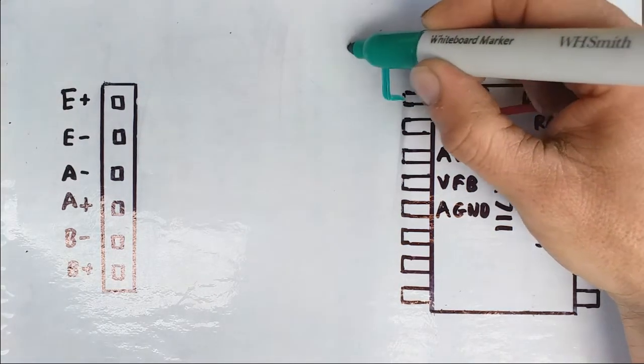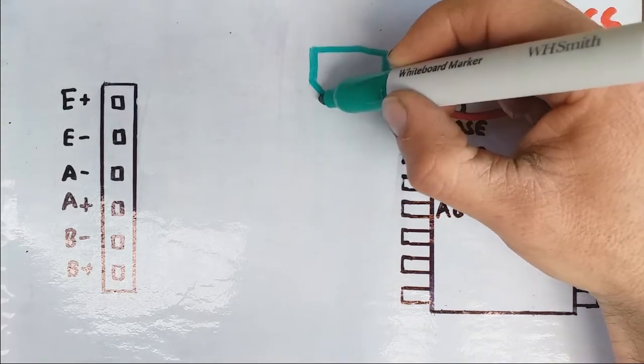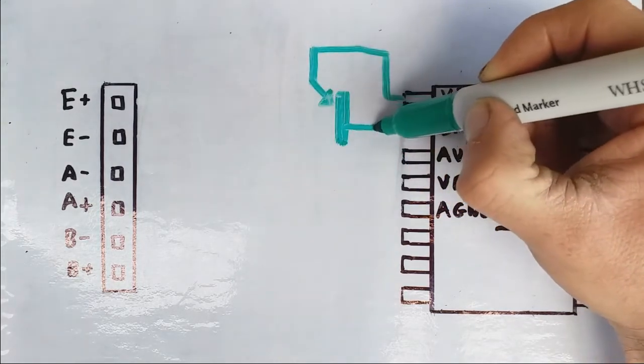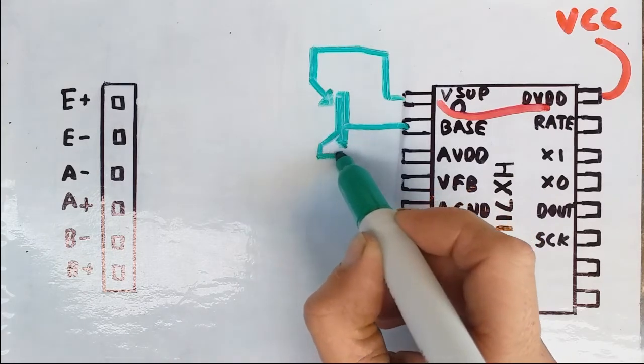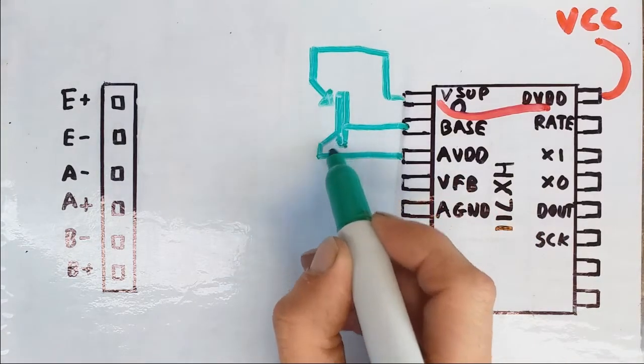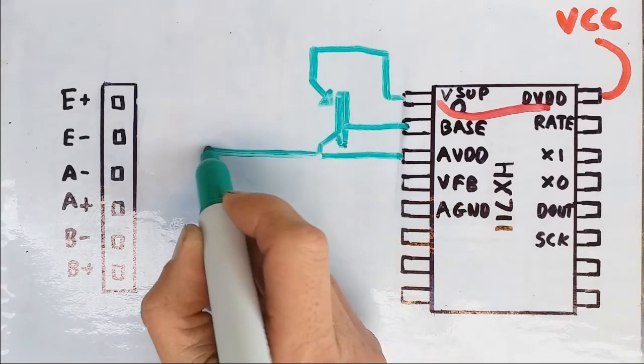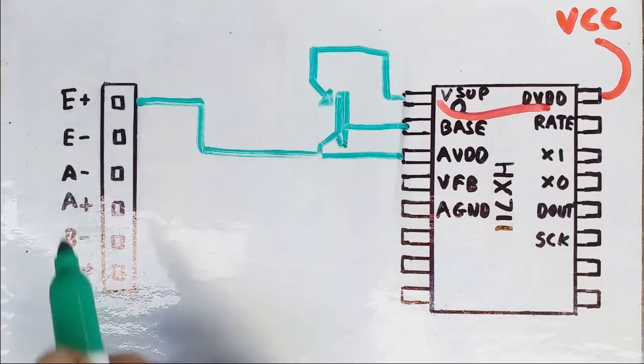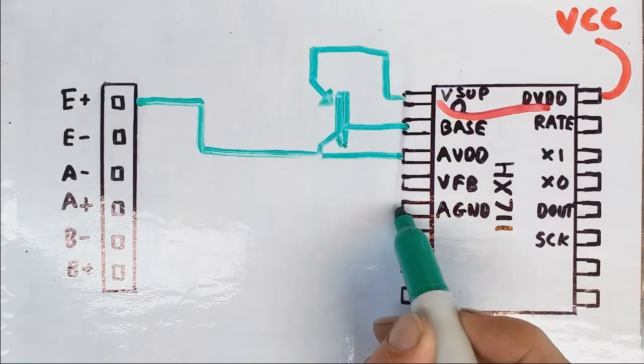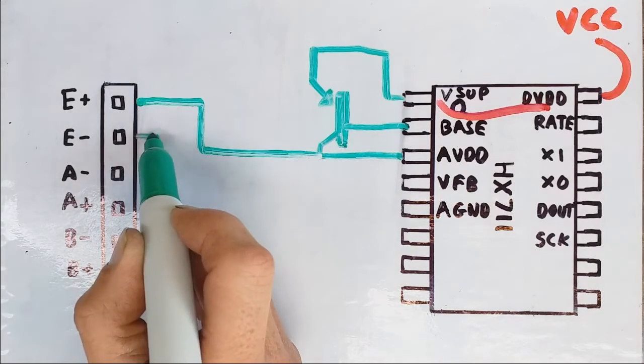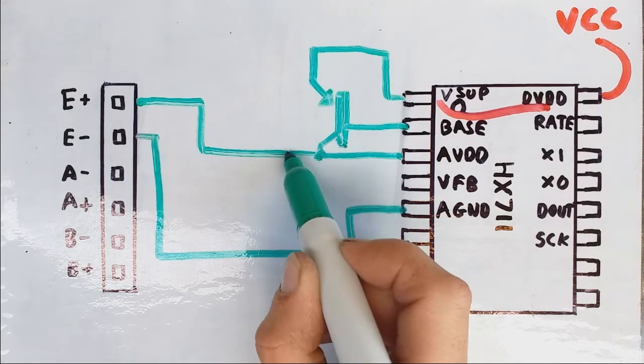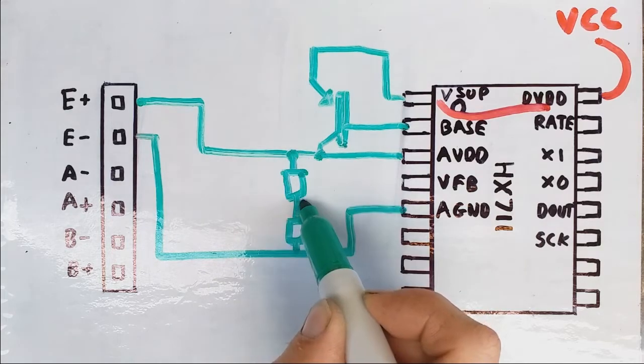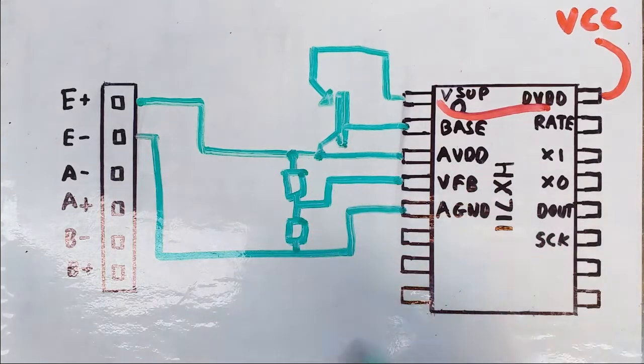The transistor is connected like so, base connected to base pin and then this is going to go to analogue voltage which is otherwise known as E+. Now from the analogue ground which goes to E-, we're going to have a potential divider across here and the middle of that goes to the voltage feedback pin.